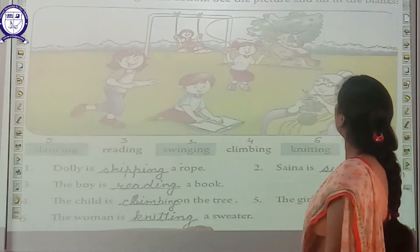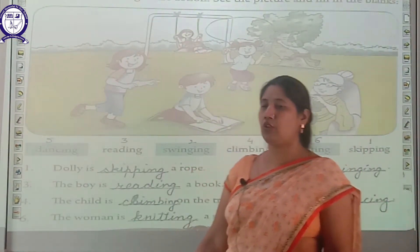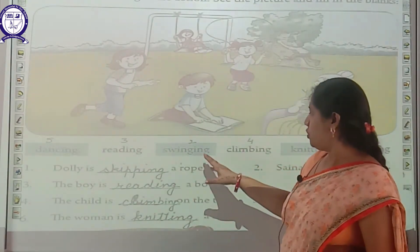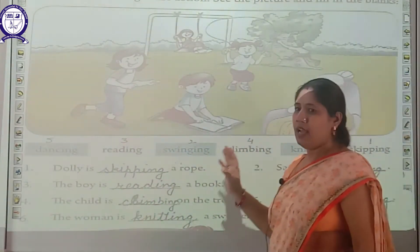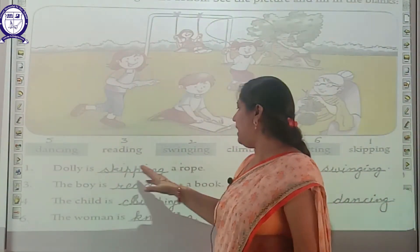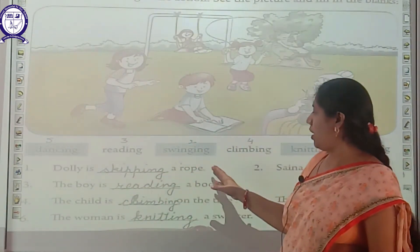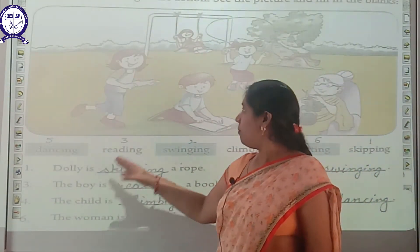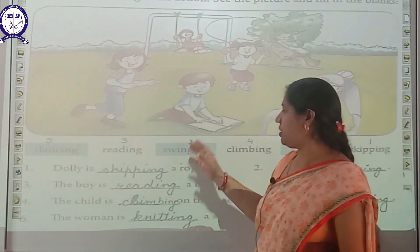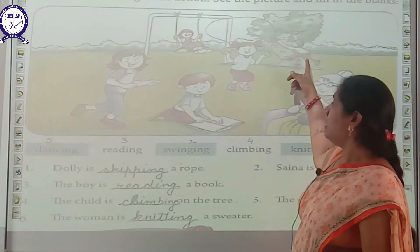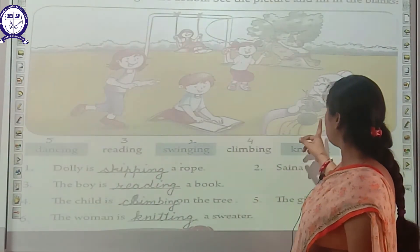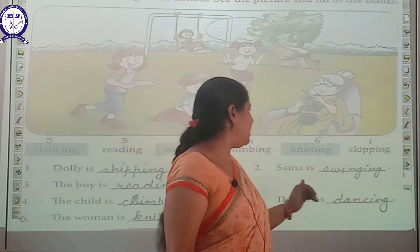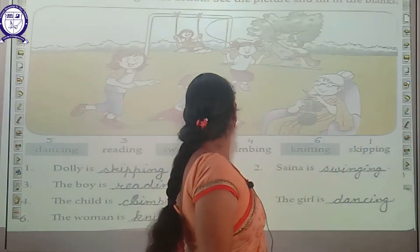Everybody is doing some actions. See the picture and fill in the blanks — this is a picture composition. Complete the sentences with verbs from the help box: dancing, reading, swinging, climbing, knitting, and skipping. Dolly is skipping a rope. Wy is reading a book. The child is climbing a tree. The woman is knitting a sweater. Sina is swinging. The girl is dancing.